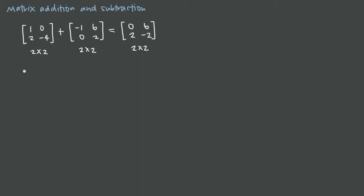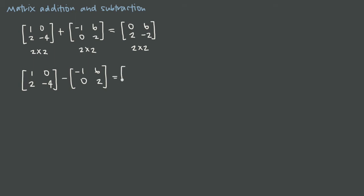I can do the same thing for subtraction. So let's say I want to subtract 1, 0, 2, negative 4, and I want to subtract the same matrix negative 1, 6, 0, and 2. Matrix subtraction, just like matrix addition, is only defined when the dimensions of the two matrices match. So because I have 2 by 2 here I have to have 2 by 2 here. And then the result, again just like addition, will also be the same dimensions — 2 by 2. So in order to subtract, I again subtract corresponding entries.